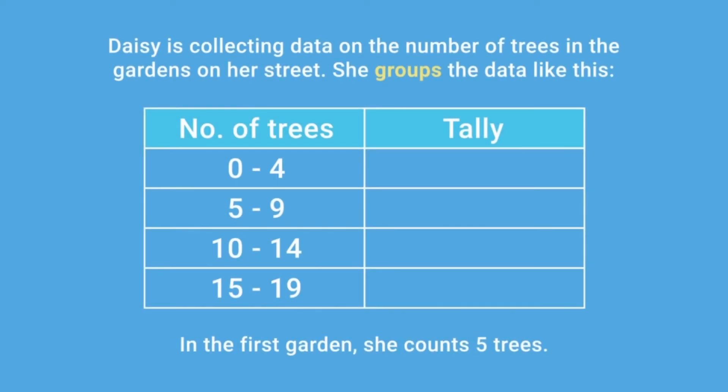In the first garden, she counts five trees. This is in the group five to nine, so she records this with a tally.